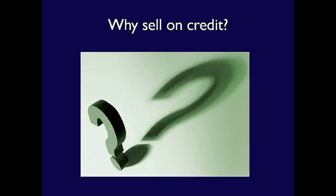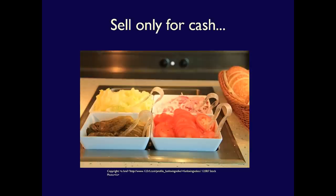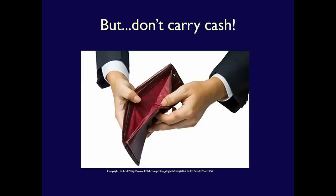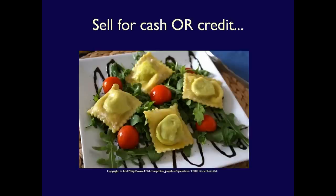Before we work on examples, let's explore why a company would want to sell on account or for credit. Down the street from my office, there's a little fast food place that makes excellent vegetarian food. I never carry cash, and this place only accepts cash, so I almost never go there. Instead, I go to a competitor nearby that accepts cash or credit. That's exactly why companies sell on account — they know that if they don't, one of their competitors will, and they'll lose customers.